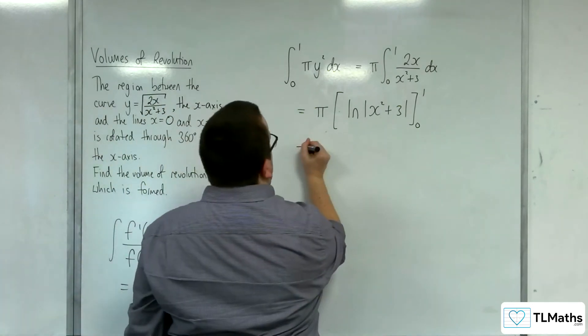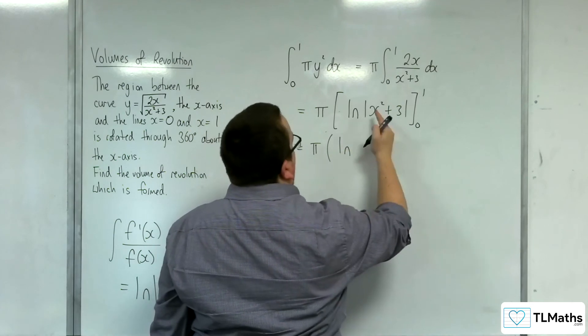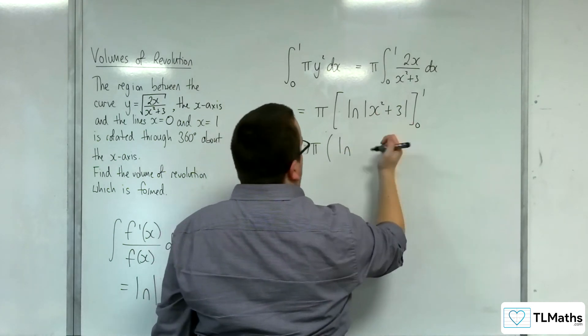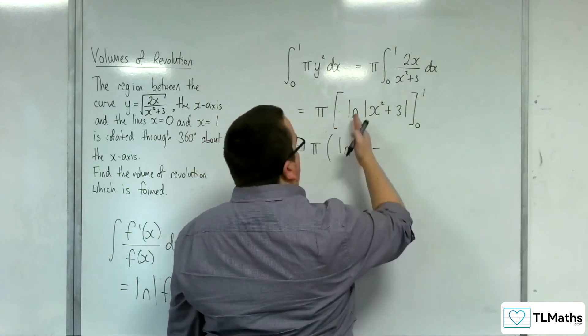Substituting in the 1, we're going to get log of 1 plus 3, so 4, modulus of that is just 4, so log 4. Then, take away substituting in 0, we're going to have log 3.